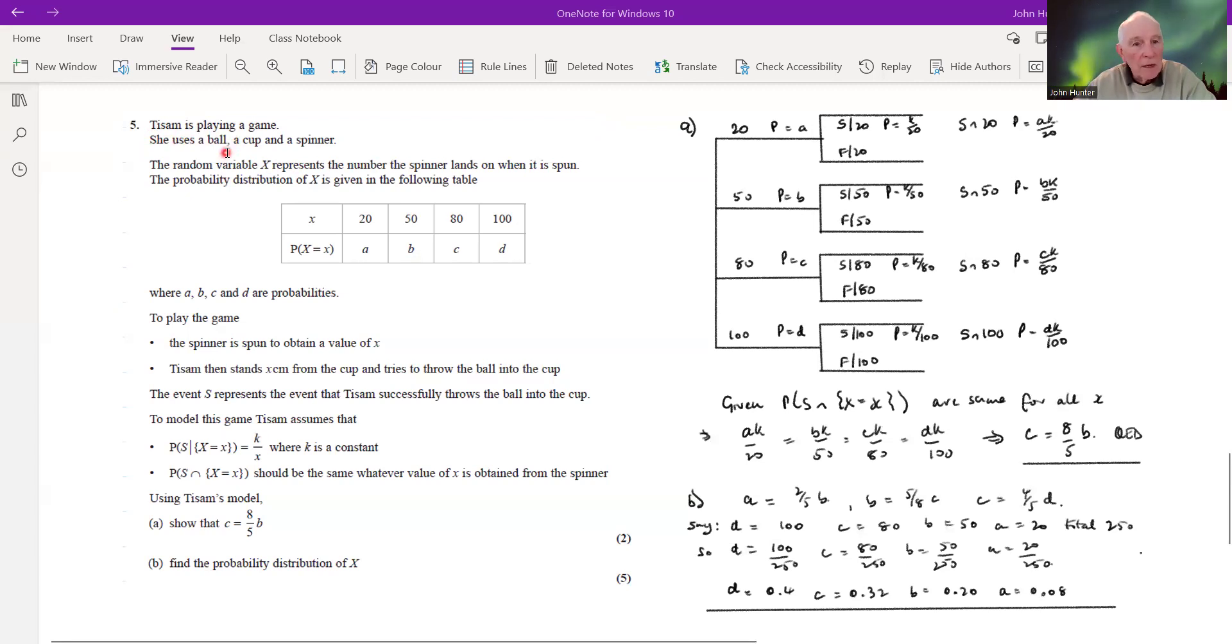Let's have a look. Tisam is playing a game. She uses a ball, cup, and spinner. The random variable x represents the number that the spinner lands on when it is spun. The probability distribution is given in the following table as a, b, c, d. Well, we don't know any numbers there at all.